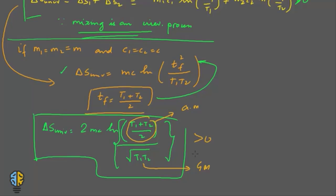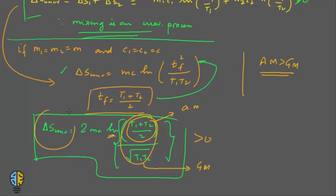We always know that the arithmetic mean of two numbers is greater than the geometric mean. So the fraction (t1 + t2)/2 over √(t1·t2) is greater than 1, the log of a value greater than 1 is always positive, and therefore the entire ΔS_universe is always positive.